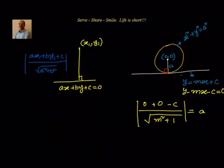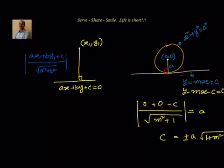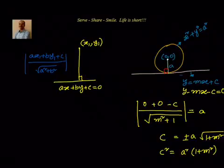In this case radius is equal to a. Therefore we can write down c equal to plus or minus a into root of 1 plus m square as the condition to be satisfied, or we can square it up and say c square equal to a square into 1 plus m square. We can do this in another method also.